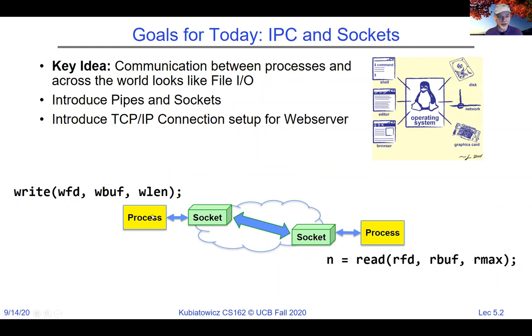The mental model here is: process A on one side of the network talks to process B on the other side, and they use read and write just like the file interface.